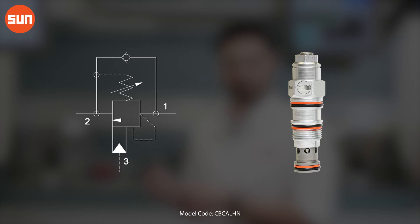Sun's CBCA has three ports. We have port 1, which is our load holding port. This is where load induced pressure is applied to the valve. If that load induced pressure goes above the valve setting, the valve opens and allows oil to flow from port 1 to port 2.